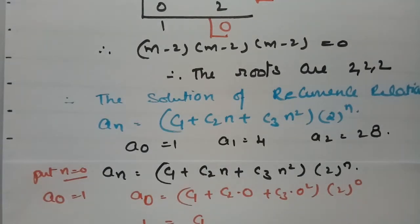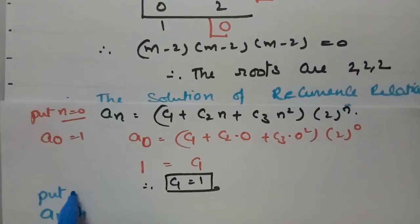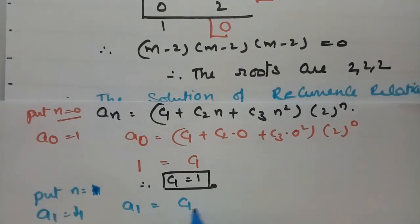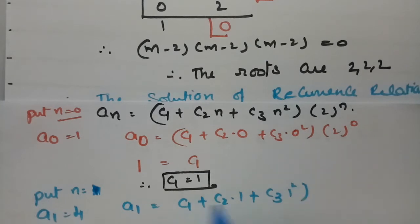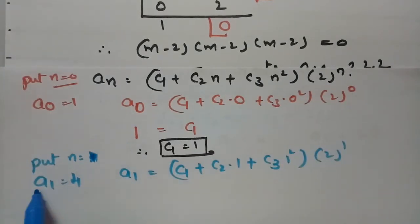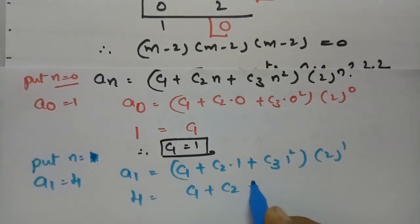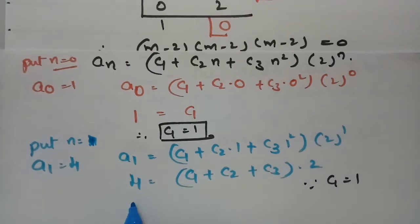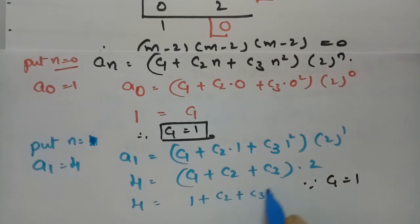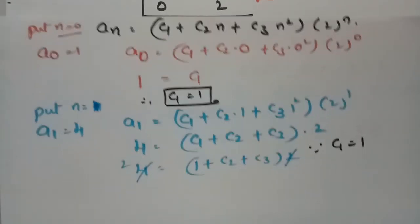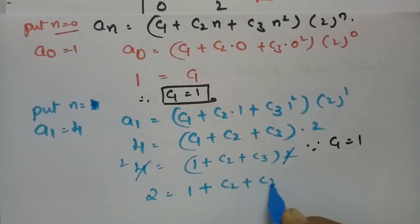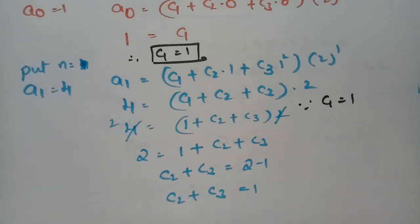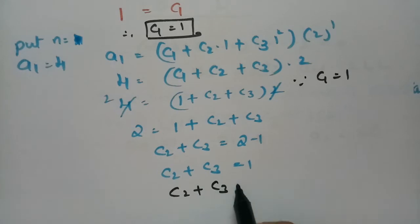For a_1 = 4, put n = 1: a_1 = c_1 + c_2·1 + c_3·1² times 2^1, so 4 = c_1 + c_2 + 2·c_3. Since c_1 = 1, we get 4 = 1 + c_2 + 2·c_3, which simplifies to c_2 + 2·c_3 = 3. Wait — dividing: 2 = 1 + c_2 + c_3, therefore c_2 + c_3 = 1.